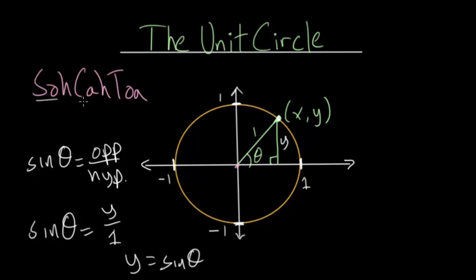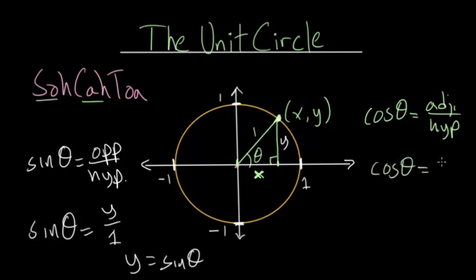We can look at the cosine and find a ratio there. Cosine of theta equals the adjacent side divided by the hypotenuse. Going back to our triangle, the adjacent side is the x-coordinate of this point. So the adjacent side equals x, and the hypotenuse equals 1. We can rewrite cosine of theta as x over 1, or simply x equals cos(theta).